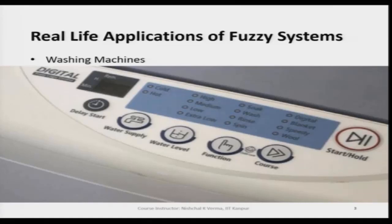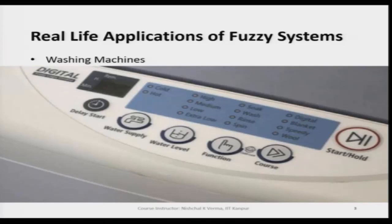In these washing machines we see lots of linguistic terms. For water supply we select cold or hot; for water levels we select high, heavy, medium, low, or extra low; for functions like soak, wash, rinse, spin; and for course we see digital, blanket, speedy, wool. The fuzzy logic controller takes inputs from users in terms of these linguistic variables.